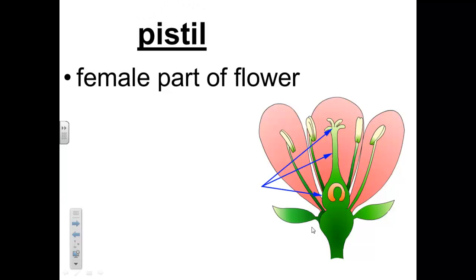The pistil is the female part of the flower. A pistil often has a bottle shape with a wide bottom and a narrow neck. A flower may have more than one pistil. In your notes page you will have to label all three parts of the pistil.